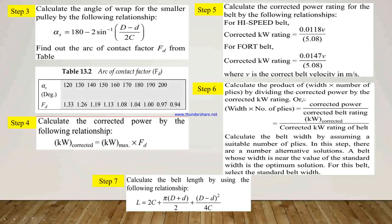In the next step, we calculate the product of width into number of plies, using the ratio of corrected power divided by corrected belt rating. We then calculate the belt width by assuming a suitable number of plies. There are a number of alternative solutions; a belt whose width is near to the standard width value is the optimum solution. In step number 7, the last step, we calculate the length of the belt using the formula.